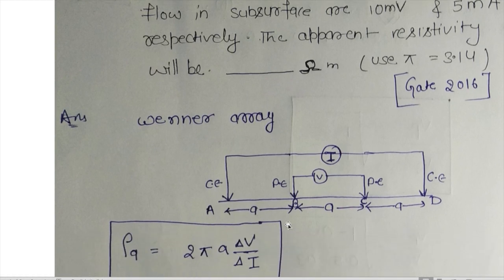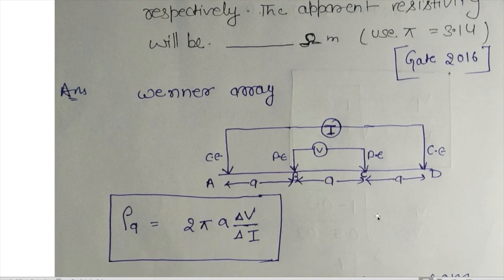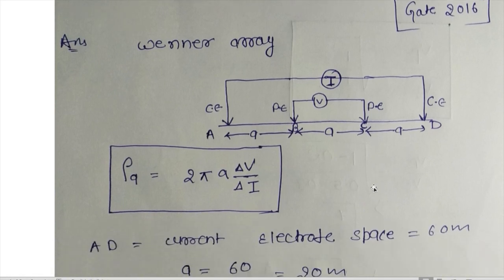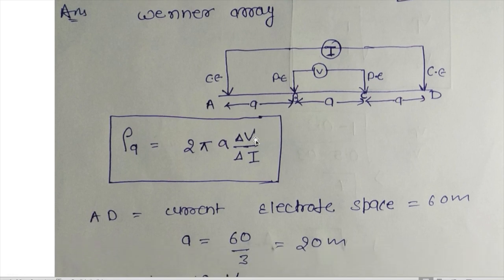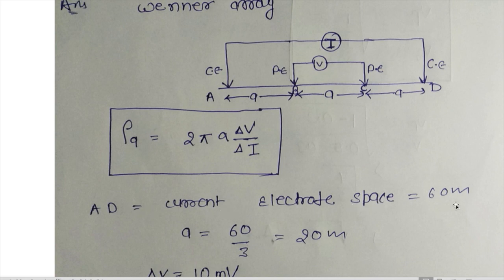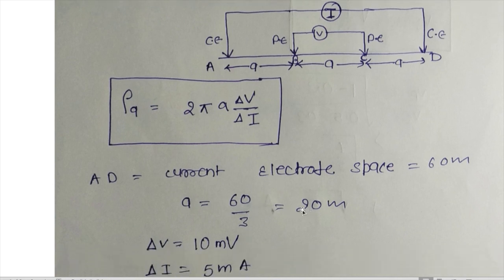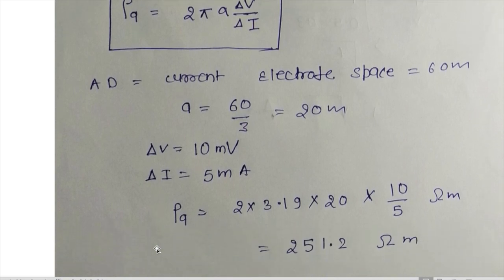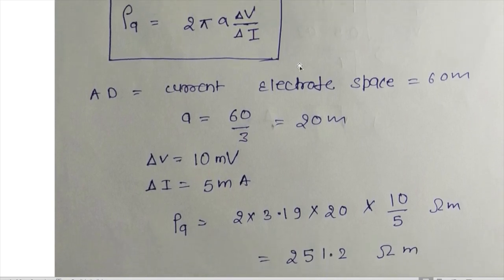AB equals BC equals CD. According to the Wenner array, the formula for apparent resistivity is 2πa × (ΔV / ΔI). Here, 'a' is the distance between adjacent electrodes. Since AD is 60 meters and there are 3 equal spacings, a = 60/3 = 20 meters. ΔV = 10 millivolts and ΔI = 5 milliamperes.